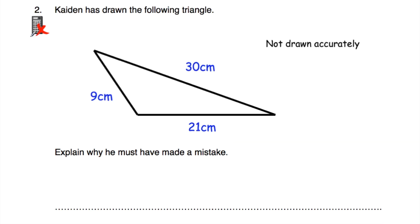Let's look at question number two. Question number two says Caden has drawn the following triangle with sides of 9cm, 21cm, and 30cm. The question says explain why he must have made a mistake.